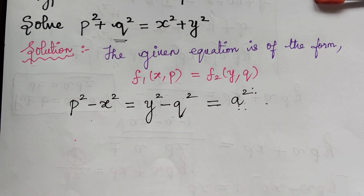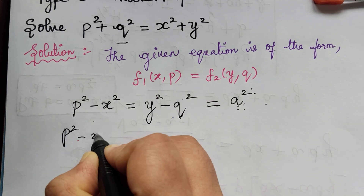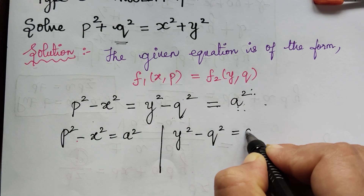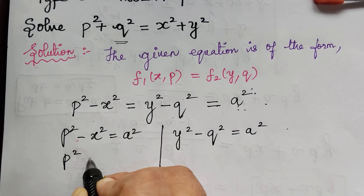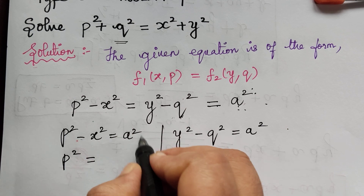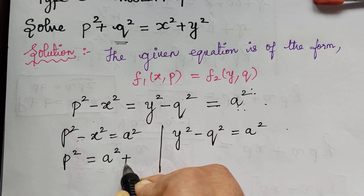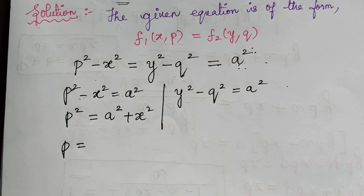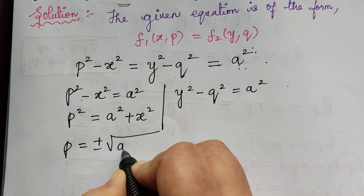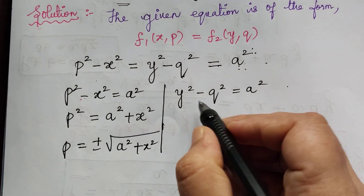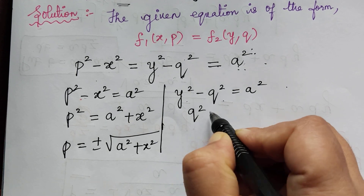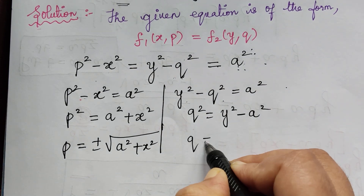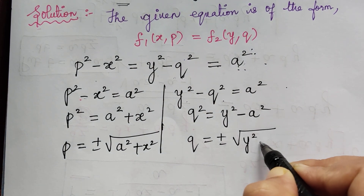From this, p² − x² = a² and also y² − q² = a². So from this we get p² = a² + x², and therefore p = ±√(a² + x²). And from the second equation, q² = y² − a², so q = ±√(y² − a²).